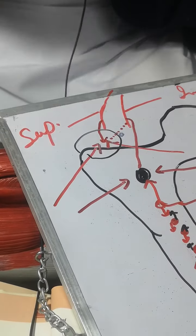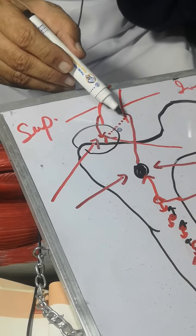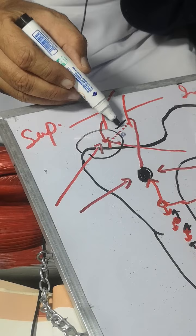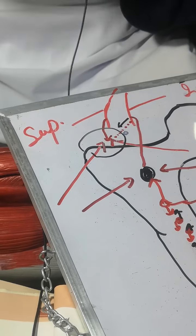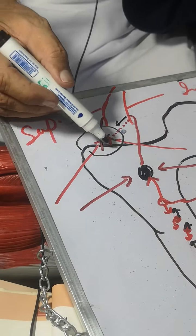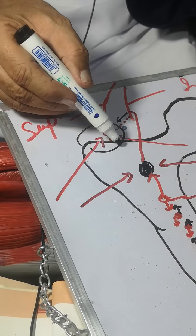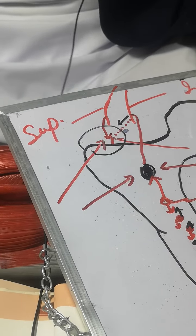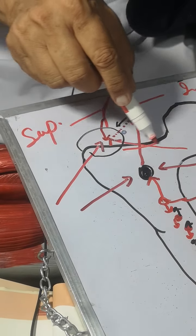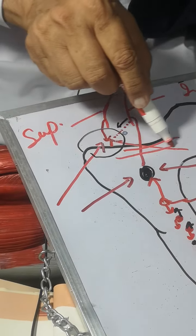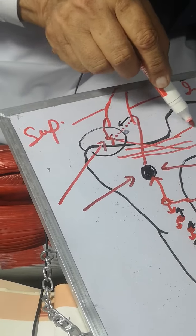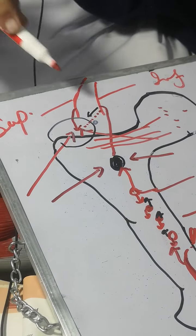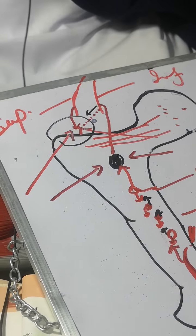This trochanteric anastomosis may be joined by a branch from the inferior gluteal artery. From this anastomosis, arteries pass through the neck and it is one of the main blood supplies of the head of the femur — the trochanteric anastomosis.